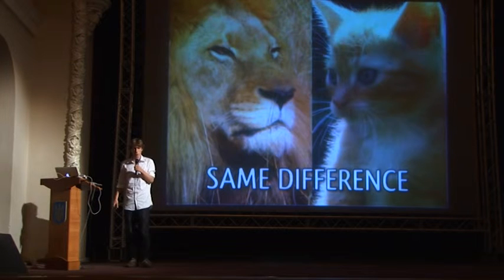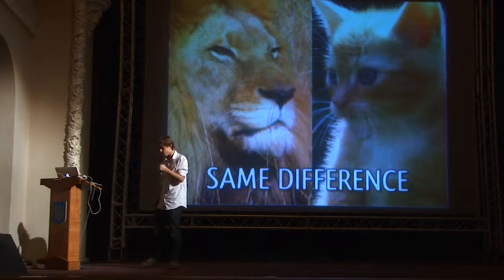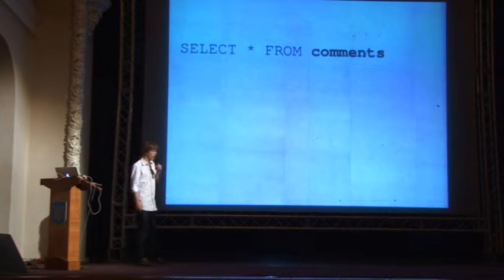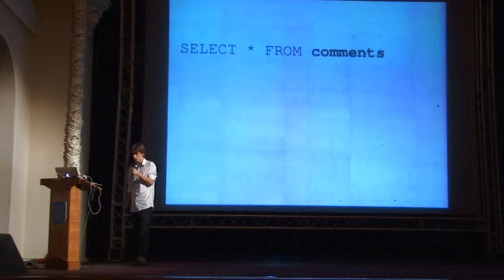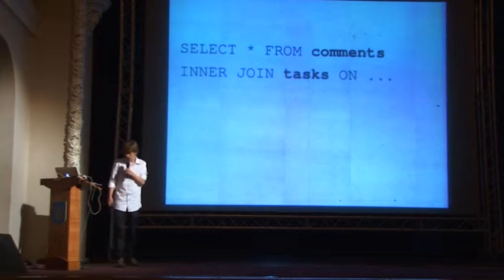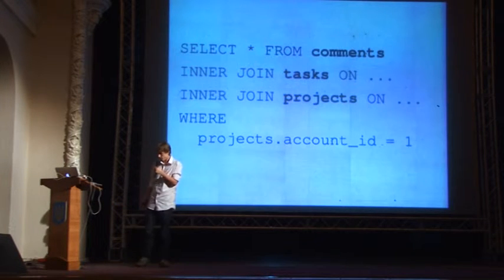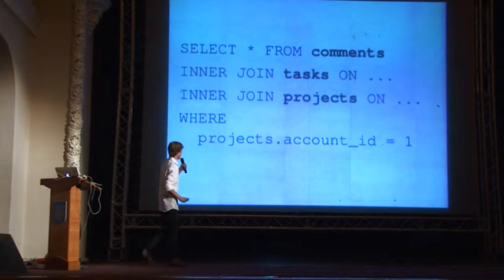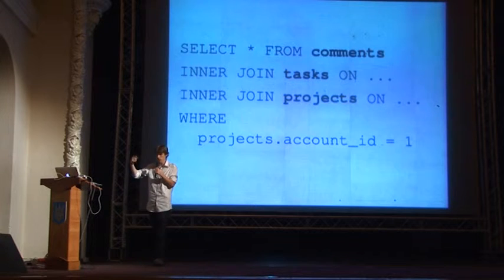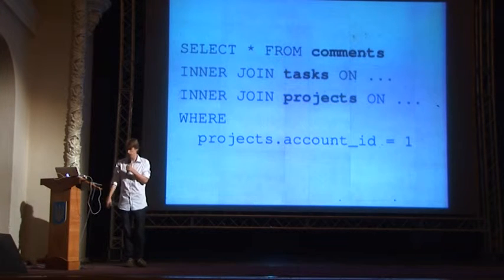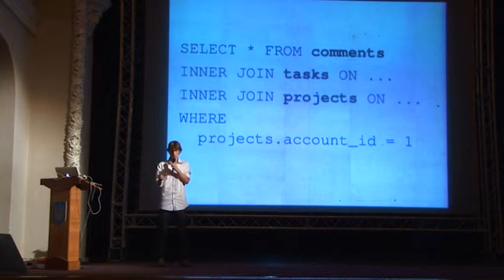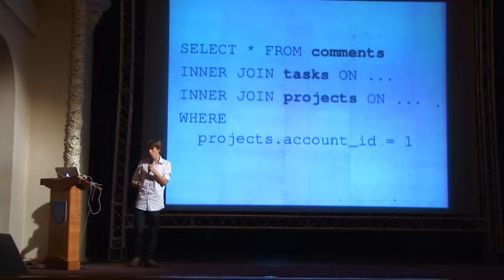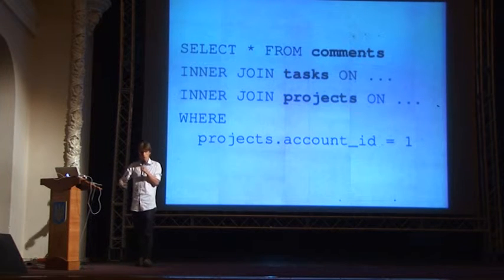What I did was think about the actual SQL that would be generated in the end. In both cases, it's exactly the same: select all from comments, inner join tasks, inner join projects, where the account ID is whatever. The thing to note is it's linear — just a list of things getting joined together. But the actual data structure we had was more complex. So I thought I need to transform this data structure into something else that I can more easily generate this SQL from.